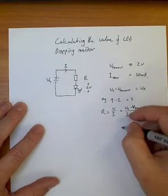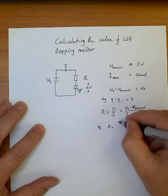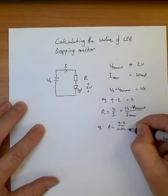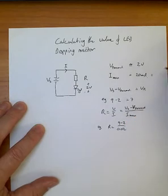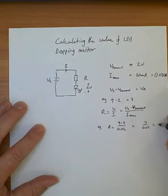So to use my example here, R equals 9 minus 2 divided by 0.02. 20 milliamps is 0.020 Amps, equals 7 divided by 0.02. Now I know that that's 350 ohms.